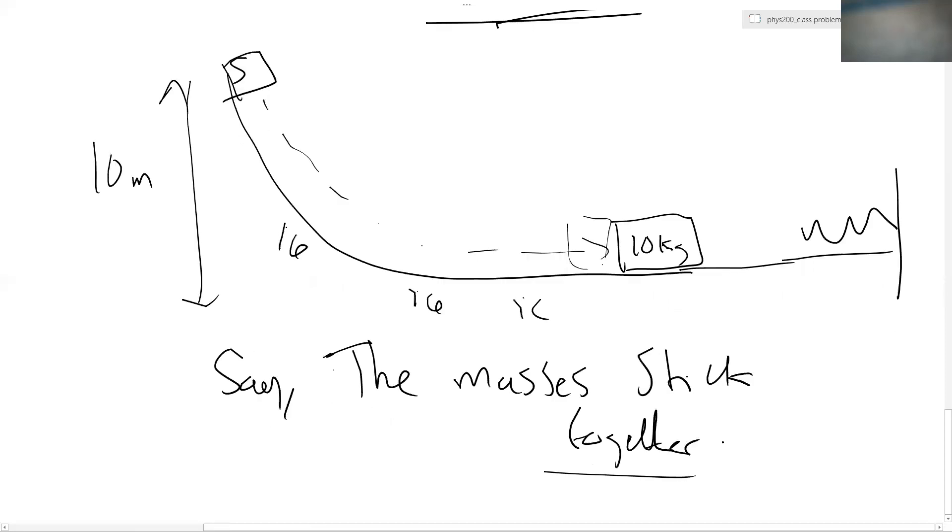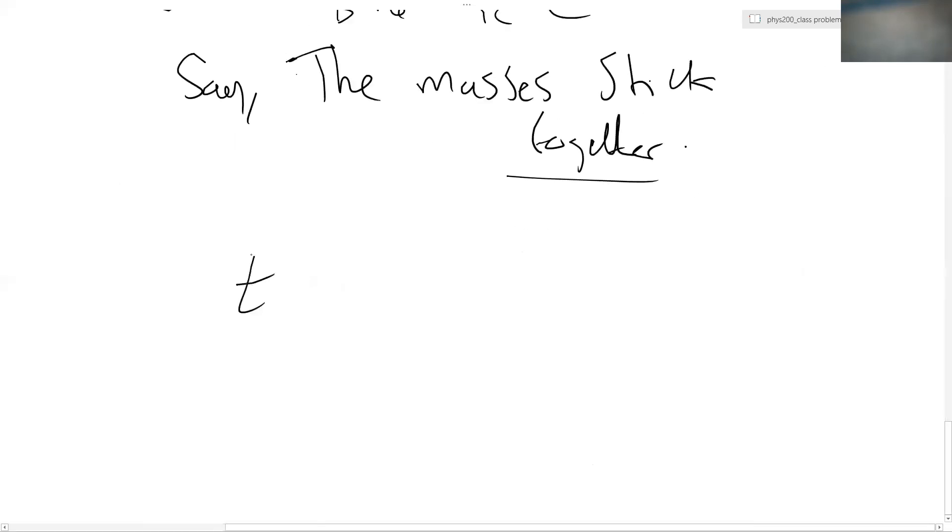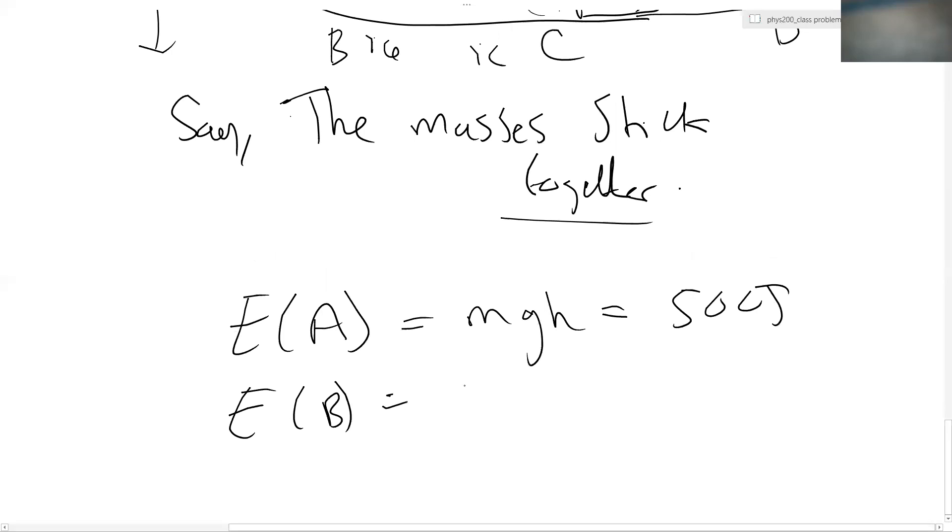So if they stick together, how does that affect the compression of the spring? Well, let's see. Marking on the points again, remember this is A, this is B. Let's say they collide at C. Let's say we're over here at D. So the energy of A, right? Well, that was MGH. Same as before is 500 joules. The energy of B, well, that's also 500 joules.